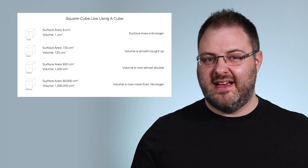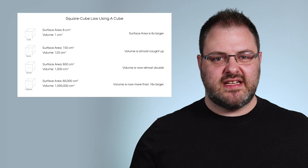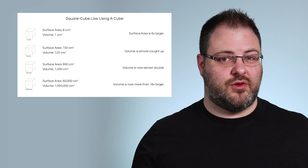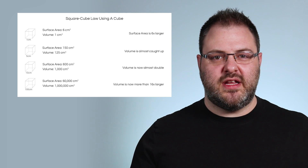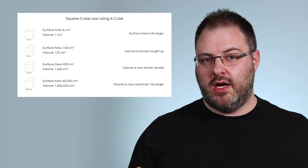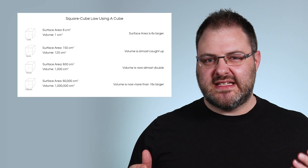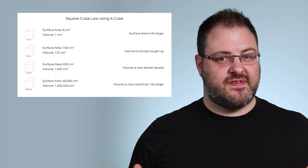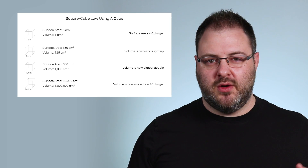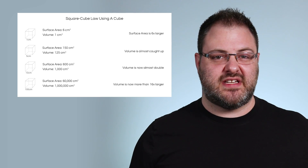If we go further to a 10 centimeter cube, we're up to 600 square centimeters of surface area and 1,000 cubic centimeters of volume, so the volume is already almost double the surface area. If we push it even further to a 100 centimeter cube, we get 60,000 square centimeters of surface area and 1 million cubic centimeters of volume, which is now more than 16 times the surface area. What's also important to remember is that for living things, bigger volume generally means bigger mass as well.